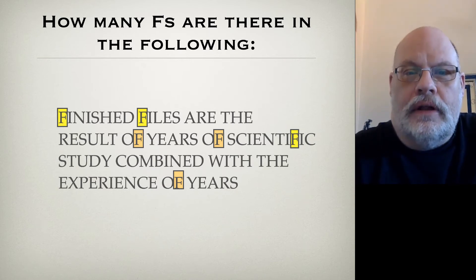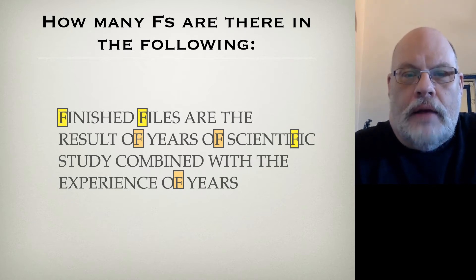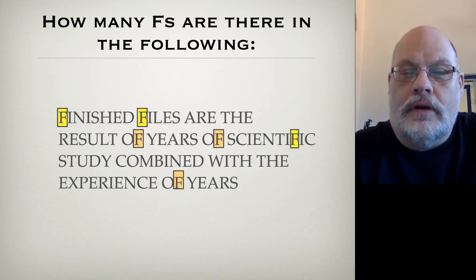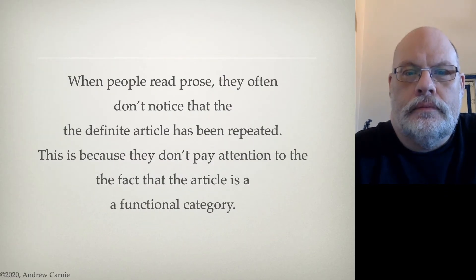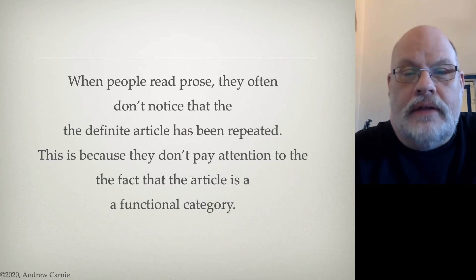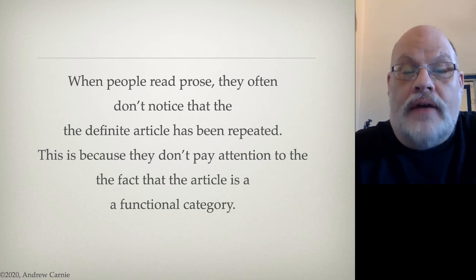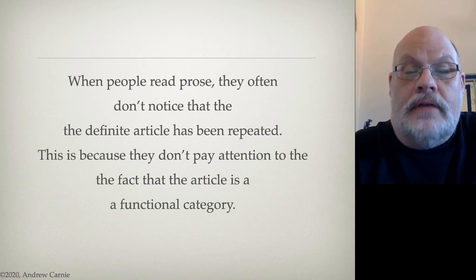I'm going to do another little experiment with you. In the following, there's a surprising thing that happens with certain articles — see if you can spot it. Did you spot it? It's the fact that the word "the" is repeated at the end of the second line and at the beginning of the third. So the sentence actually reads: "When people read prose, they often don't notice that the the definite article has been repeated." And again, it's repeated in the fourth and fifth lines. This is because they don't pay attention to the fact that the article is a functional category.